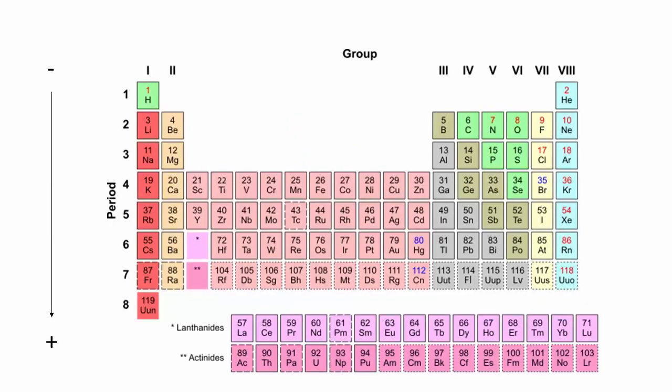Going down in a column or group, the atomic radius increases. This is to be expected as going down in a group means occupying an atomic orbital with a greater principal quantum number.